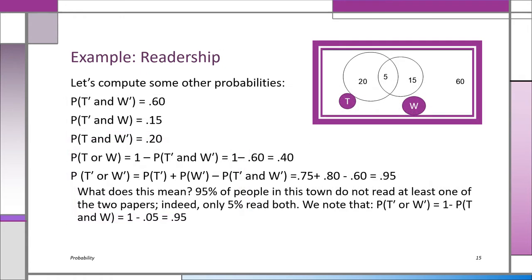We can compute more probabilities using that Venn diagram. P(not T and not W) = 0.60 — 60% don't read either paper. P(not T and W) = 0.15. P(T and not W) = 0.20. P(T or W) = 0.40, as we computed. P(not T or not W) = 0.95, meaning 95% of the people don't read at least one of the two papers — only 5% read both.